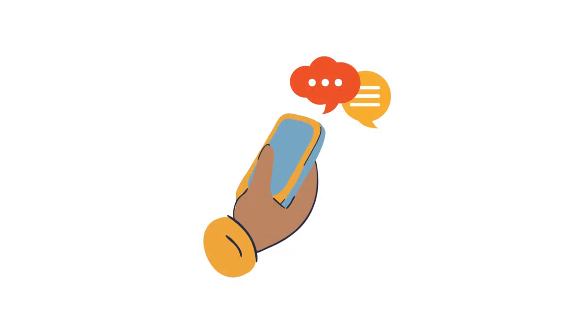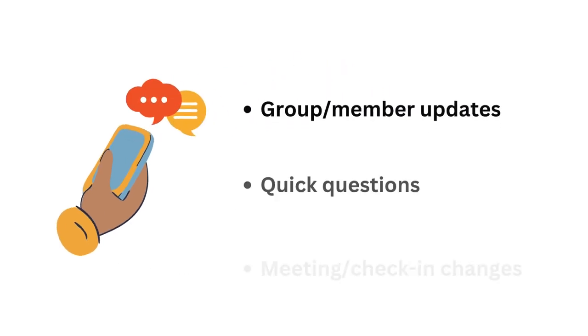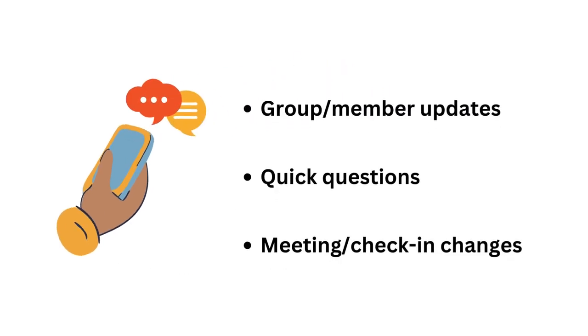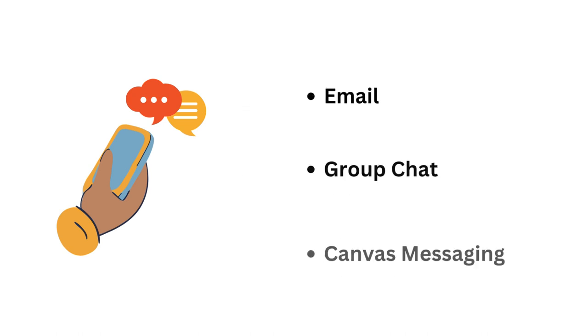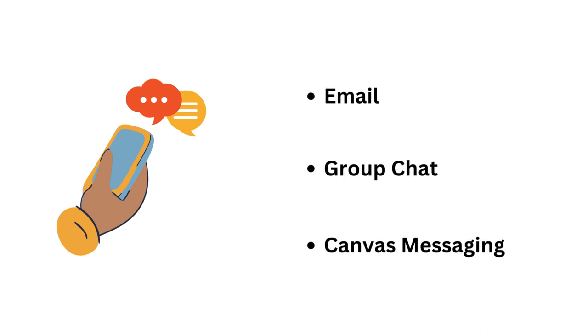Outside of class time or check-in times, establish a more casual or convenient form of communication. Having this can aid in updating your members, asking quick questions, and making changes to check-in dates. For choosing a communication method, find one convenient for everyone. Options include email, a group chat, or even the messaging feature on Canvas.